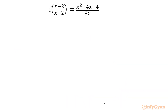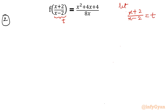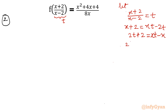Now let us see the second way of solving — using substitution. I will substitute one variable: I will put (x+2)/(x-2) = t. Cross multiplying: x + 2 = xt - 2t. Collecting terms: 2t + 2 = xt - x, so 2(t+1) = x(t-1), giving x = 2(t+1)/(t-1).